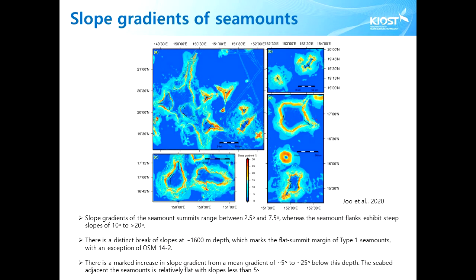The next slide is about slope gradients of the seamounts. We visualize the slope gradients from the observed bathymetry. Slope gradients of the seamounts' summits range between 2.5 degrees and 7.5 degrees, whereas the seamounts' flanks show steep slopes of 10 degrees to over 20 degrees. There is a distinct break of slopes at the 1,600 m depth, which marks the flat summit's margin of the type 1 seamounts. The seabed nearby the seamounts is relatively flat with slopes less than 5 degrees.